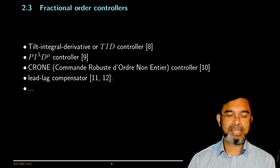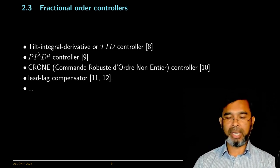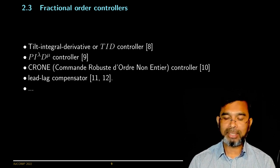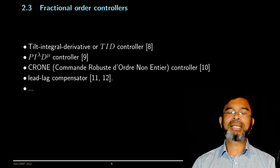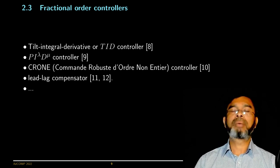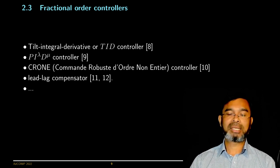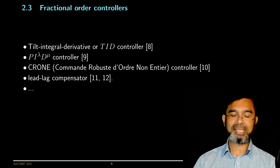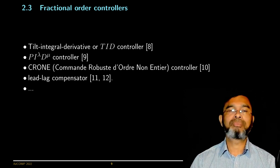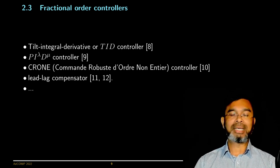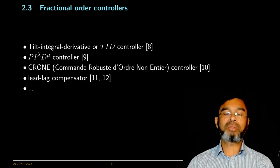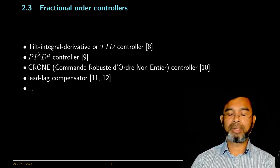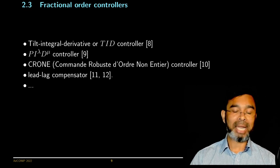The controller we will be proposing is something similar to the tilt integral derivative or TID controller. The patent obtained by Lurie from NASA describes the TID controller where the T refers to the tilt component, which simply means it doesn't have a proportional part — rather, the proportional part is replaced by an integral component with fractional order. The other two components, the integral and the derivative, remain the same. Lurie demonstrated many advantages of the TID controller; however, how to tune the parameters of this TID controller was not discussed in detail. So in this study, we try to solve that particular problem of how to tune the parameters.